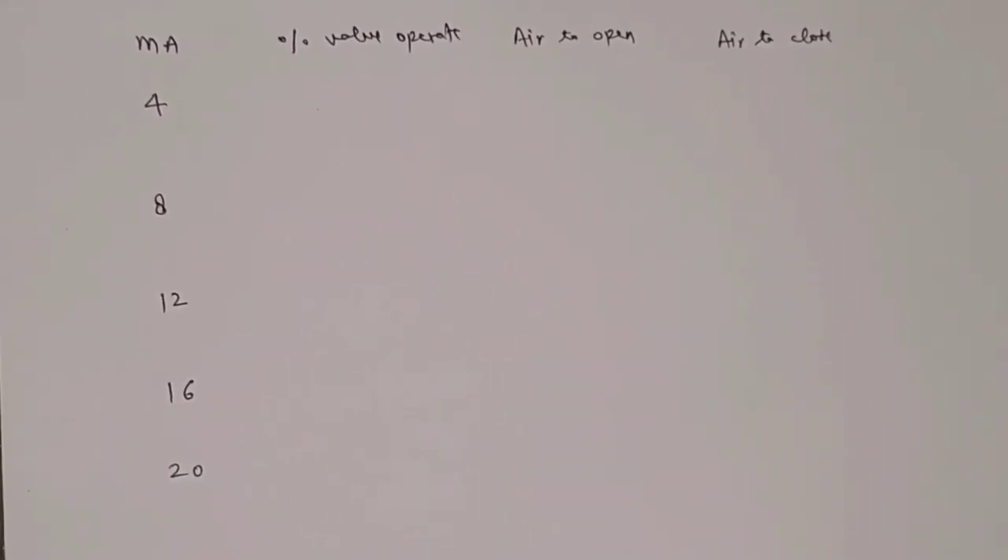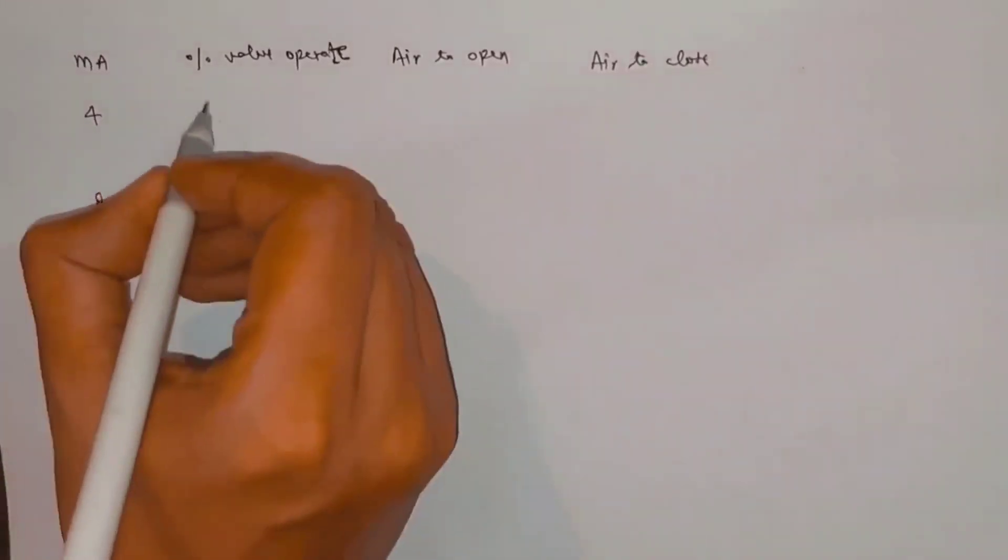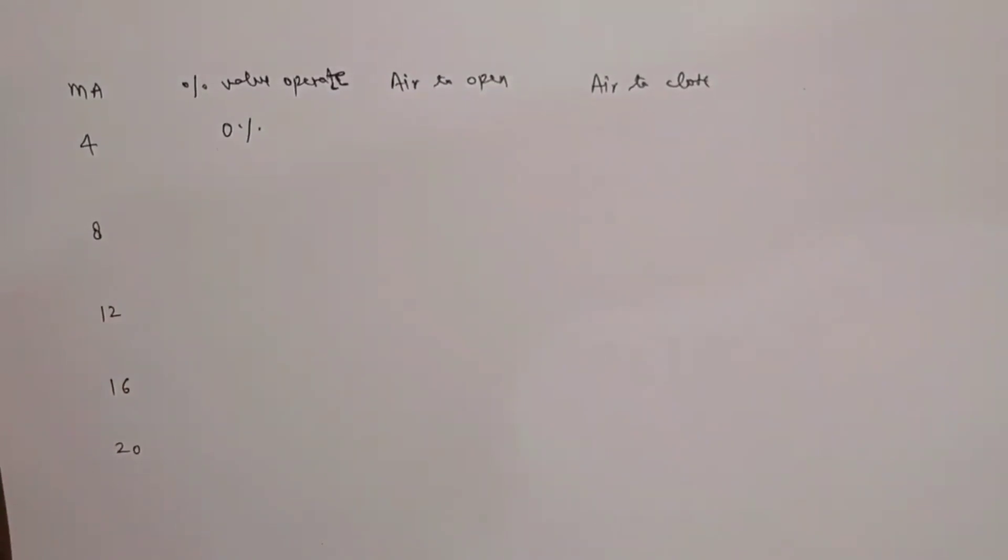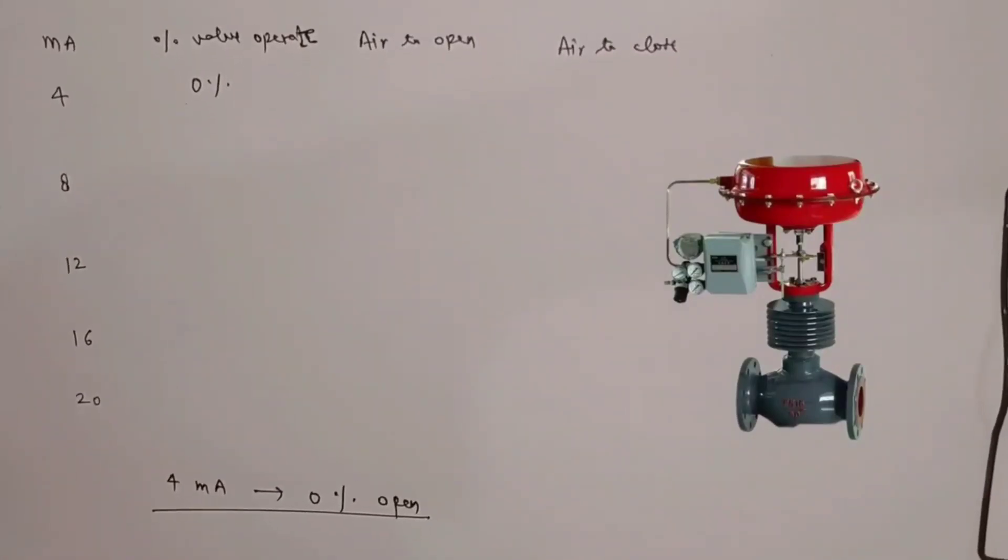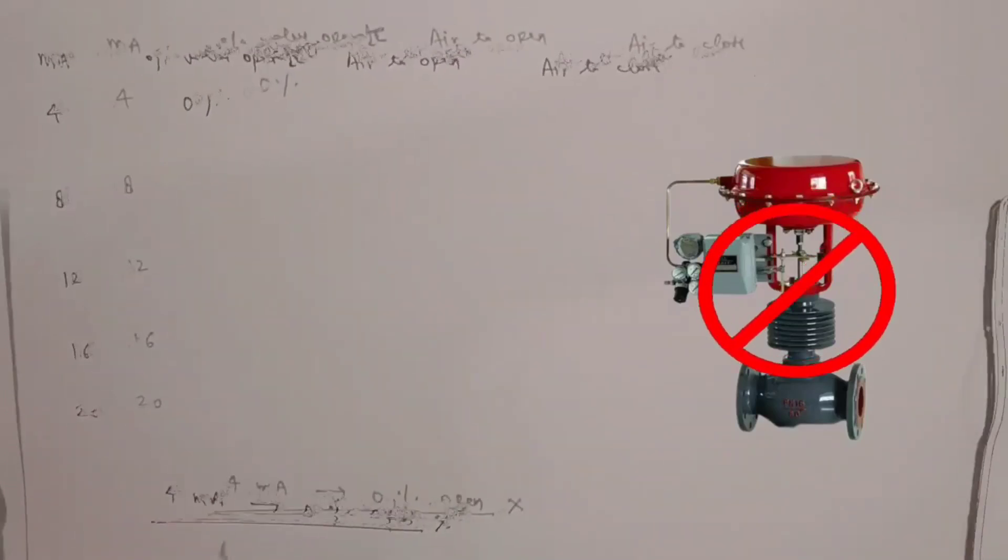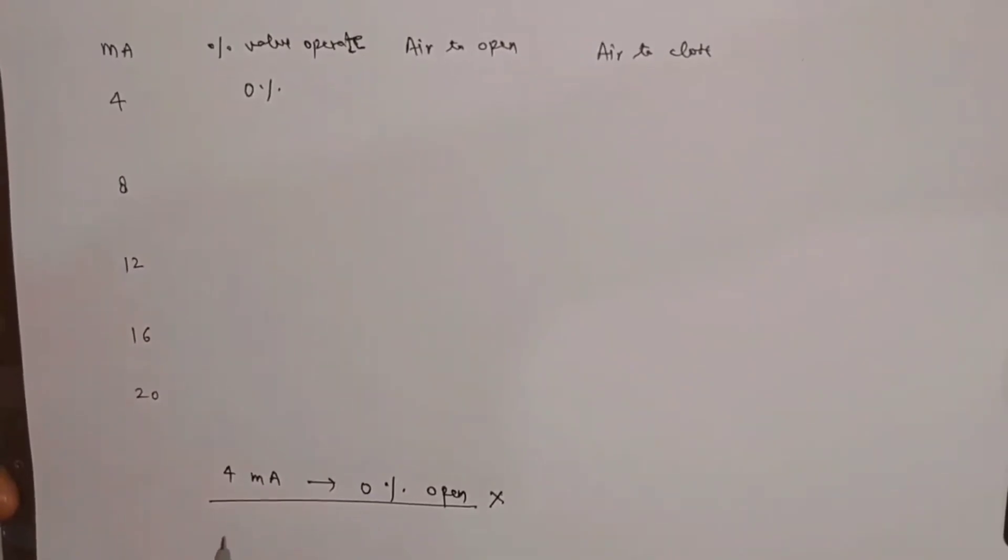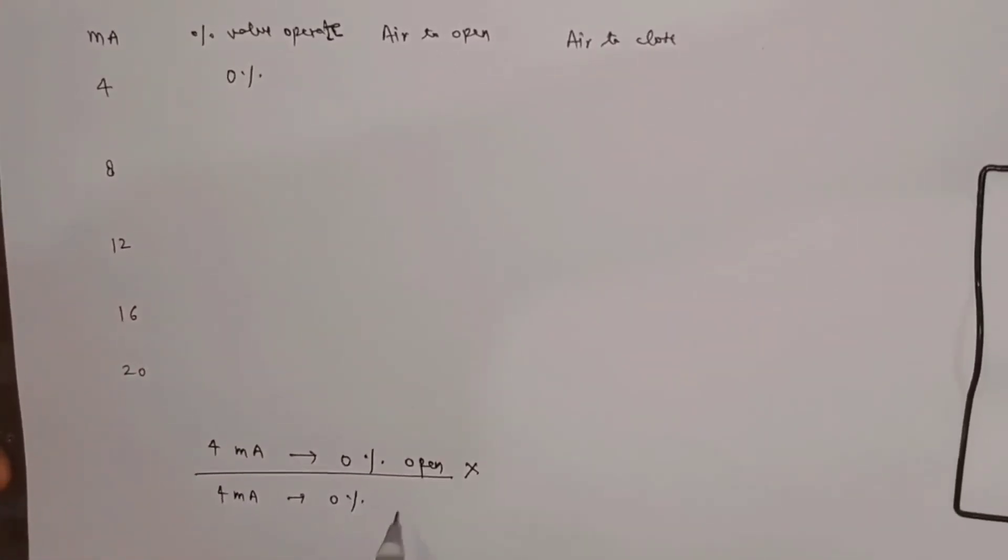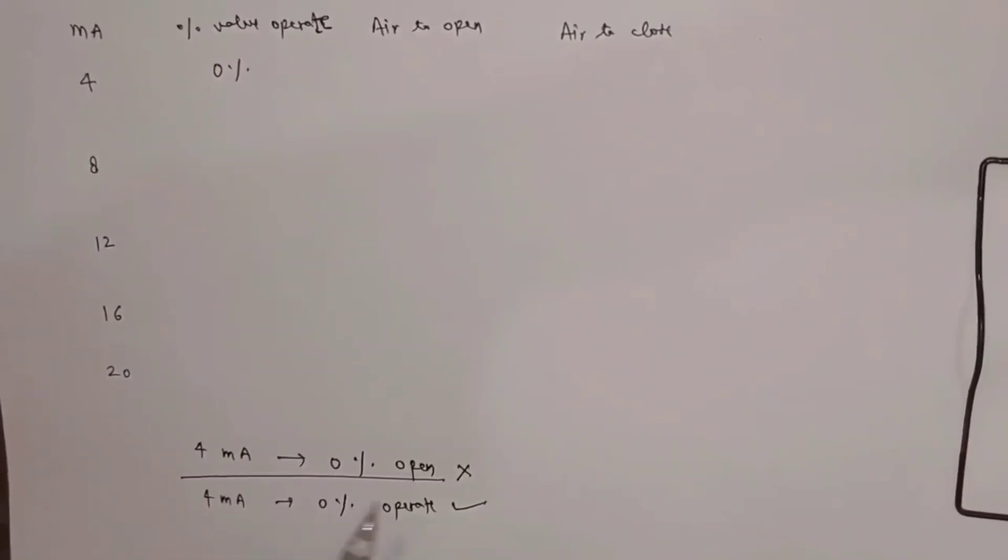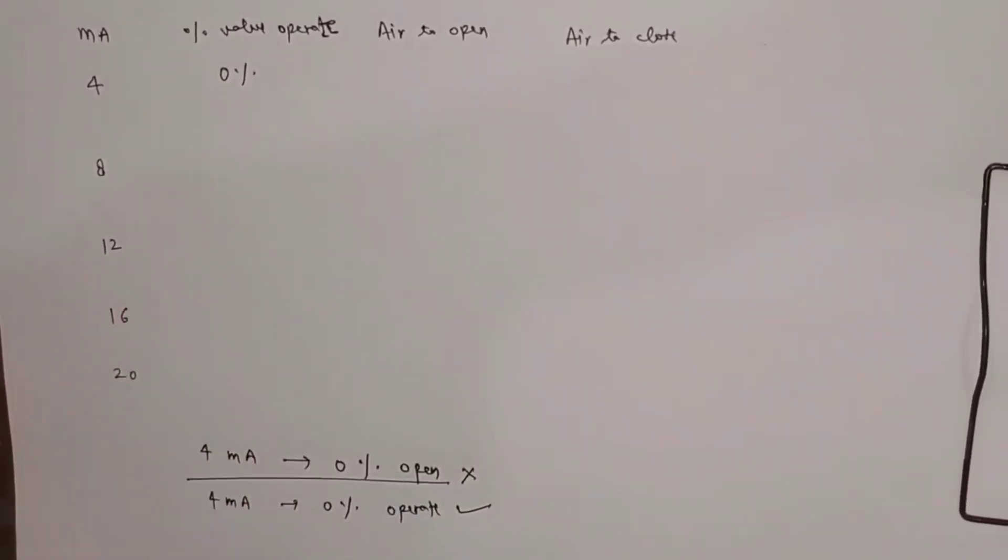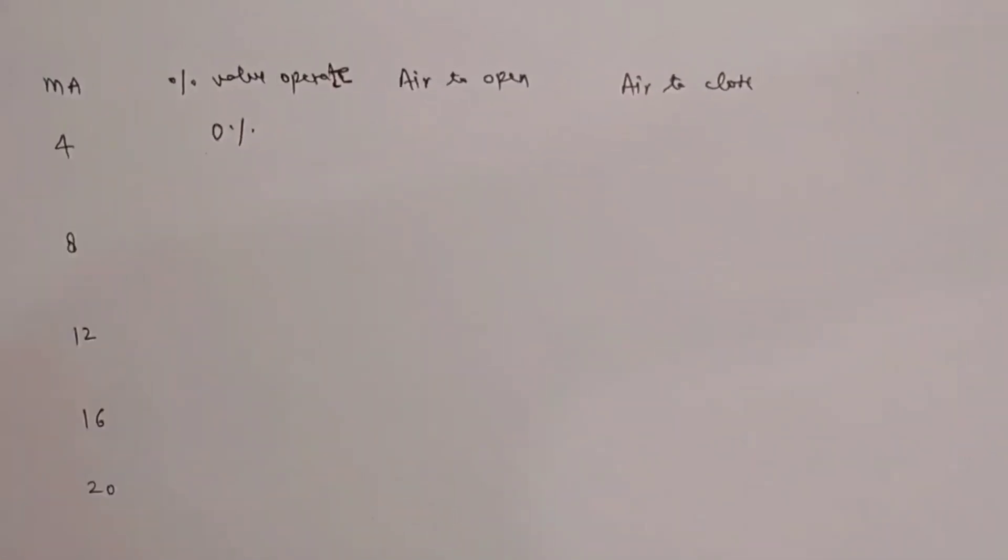Let's understand it further. Look friends, at 4 milliamp pairs, valve operates 0%. Here, you need to keep one concept in mind. At 4 milliamp pairs, many people think that valve opening is 0%. But this is not applicable on all control valves. You can say it like this: at 4 milliamp pairs, control valve will operate 0%. So this sentence is correct. Not that at 4 milliamp pairs the valve will open 0%. With this concept, you will understand everything.